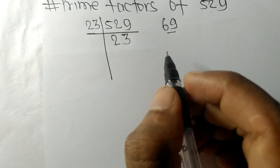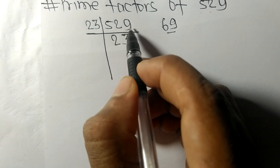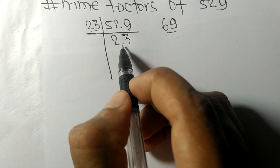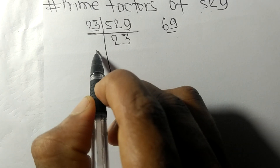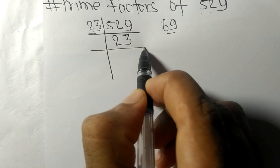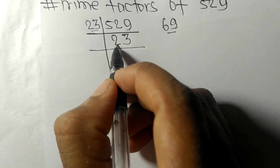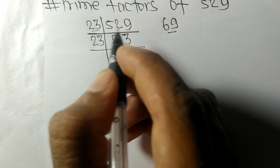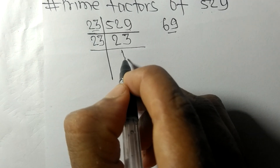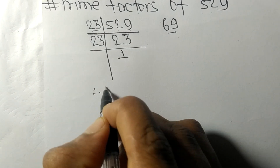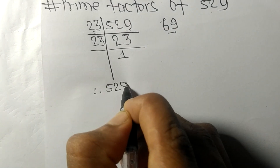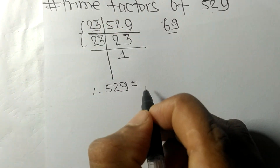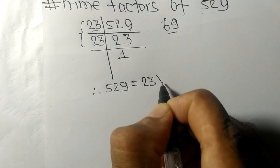On dividing 529 by 23 we get 23 as the quotient. Now 23 is divided by 23 itself and we get 1. Therefore 529 equals 23 times 23.